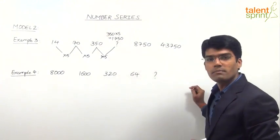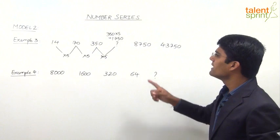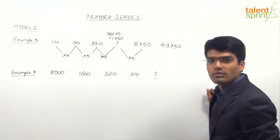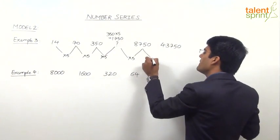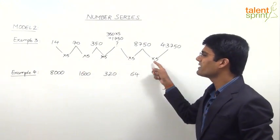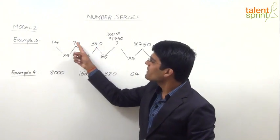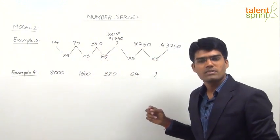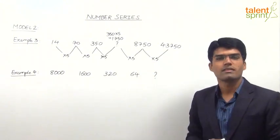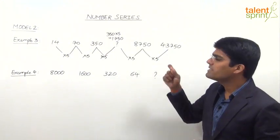We cannot confirm 1750 is the answer until we verify the remaining terms. 1750 into 5 equals 8750, and 8750 into 5 equals 43750. The ratio between two consecutive terms is consistently 5 — that is, 70 divided by 14 is 5, 350 divided by 70 is 5, and 1750 divided by 350 is 5. Each term multiplied by a fixed value gives the next term. Such a series is called a geometric series.